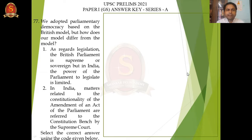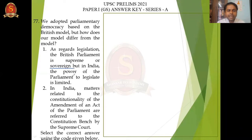Let us get into the discussion. We have taken Set A. In Set A, question number 77 is a quality question. We adopted parliamentary democracy based on the British model, but how does our model differ from the British model? We have to compare the British Parliament and the Indian Parliament. The British Parliament is supreme or sovereign, but the Indian Parliament's power to legislate is limited, because there is judicial review. Parliament can enact law only on subjects in the union list and concurrent list. So the first statement is correct.